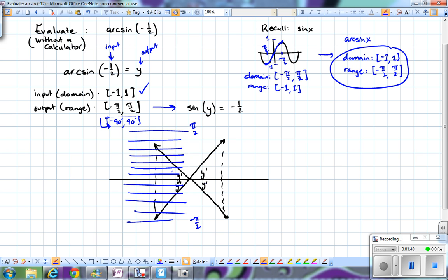Continue with this. Remember, sine is opposite over hypotenuse. Start labeling. Opposite is 1. Start labeling without the negative for right now.